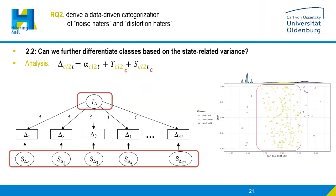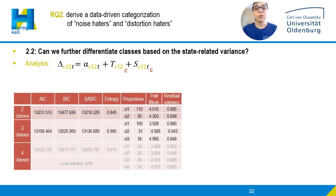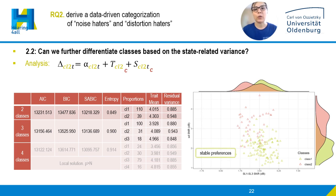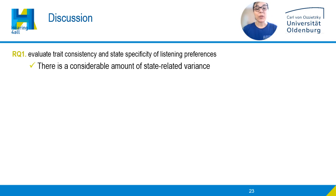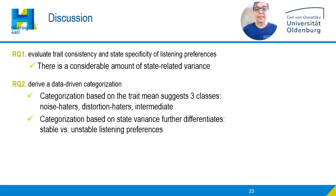We then further differentiated the majority intermediate class by modeling its data with a mixture latent state and trait model to identify further latent subgroups differing in their patterns of stability and variability. The 2-class solution was nicely interpretable with good model fit and entropy: it identified one majority class with low variance — participants with more stable listening preferences — and another class with higher state-related variance and a higher trait mean. Overall, we saw that habitual listening preferences differentiate individuals into the three classes previously seen in the literature, but we could further differentiate individuals based on their stable versus unstable listening preferences.